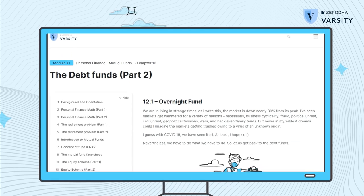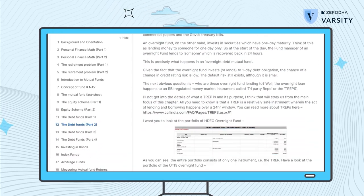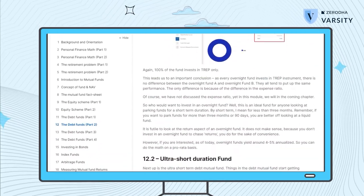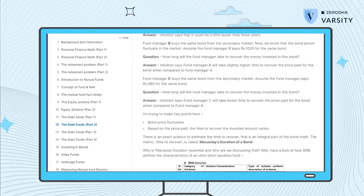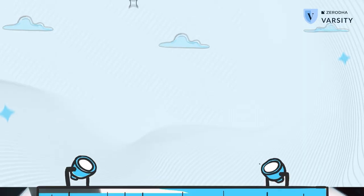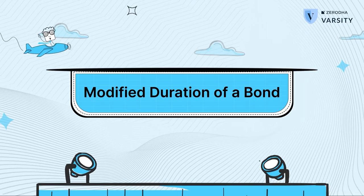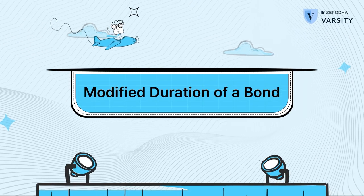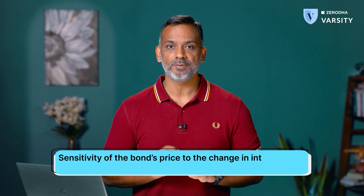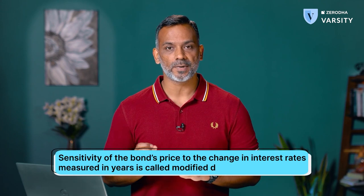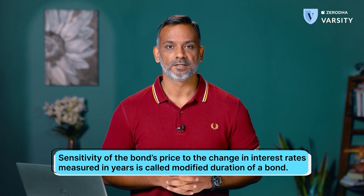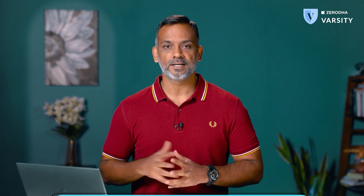I've explained duration in great detail on Varsity web, and I would encourage you to read through that to get a better understanding. The next term that I want to talk about is the modified duration of a bond. Modified duration, measured in years, is the sensitivity of the bond's price to change in interest rates. Bond prices and interest rates are directly proportional.